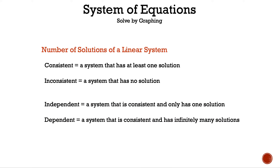Now let's take a look at the definitions of consistent, inconsistent, independent, and dependent. Consistent is a system that has at least one solution. Inconsistent is a system that has no solution. Independent is a system that is consistent and only has one solution. Dependent is a system that is consistent and has infinitely many solutions.